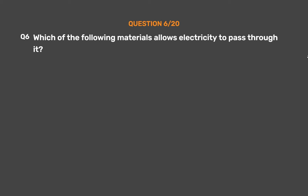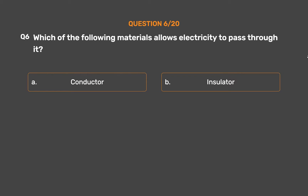Question number 6. Which of the following materials allows electricity to pass through it? Option A: Conductor. Option B: Insulator. Option C: Rubber. Option D: Glass.